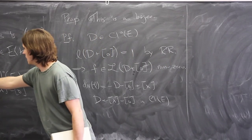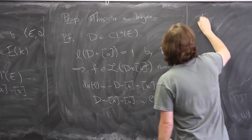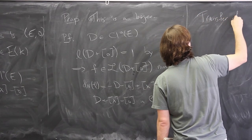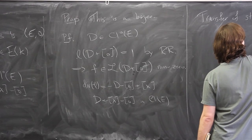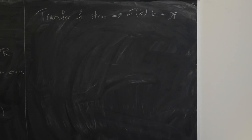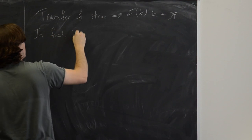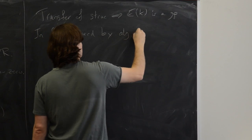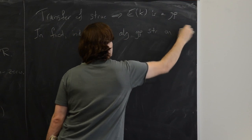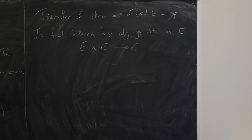So we have this bijection from the k-points of E to the class group, and since the class group is a group we can transfer that structure. By transfer of structure, E(k) is naturally a group. In fact, the group law on E(k) is induced by an algebraic group law on E — there's actually a multiplication map, a map of varieties from E × E to E, which induces the group law.